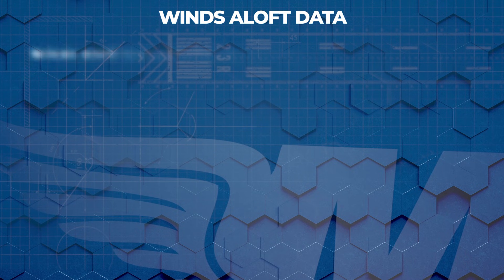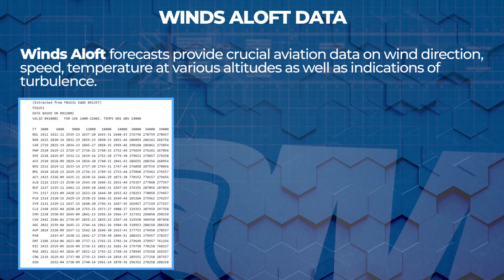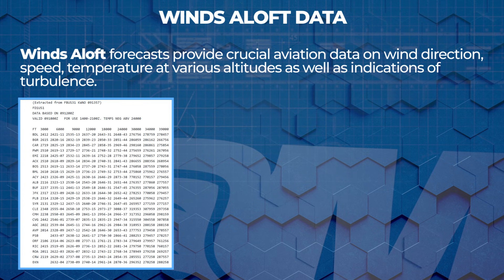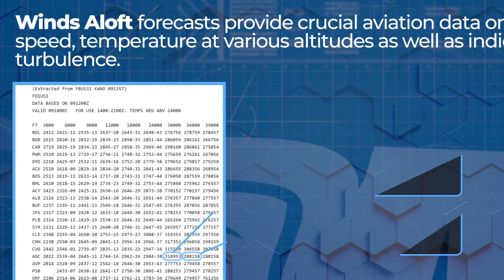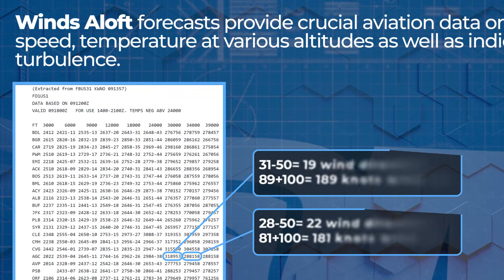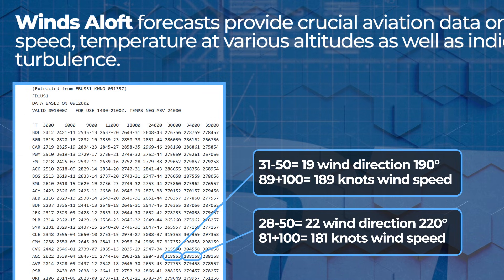Winds aloft not only tell us about wind speed and direction at different altitudes, but they also provide us clues about potential turbulence. When the wind direction or speed changes significantly over a relatively short vertical distance, it indicates wind shear, which can create turbulence in the air.